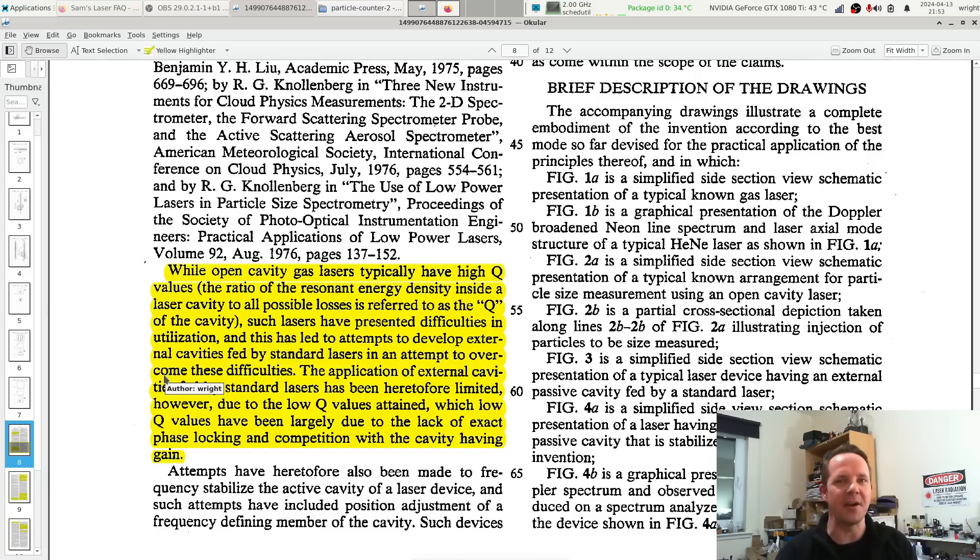It says by stabilization of the passive cavity, advantages of intracavity laser devices can be realized without incurring the practical disadvantages of such devices. Further down the patent, it says while open cavity lasers—Brewster windowed lasers—have really high Q ratios, such lasers have presented difficulties in utilization.